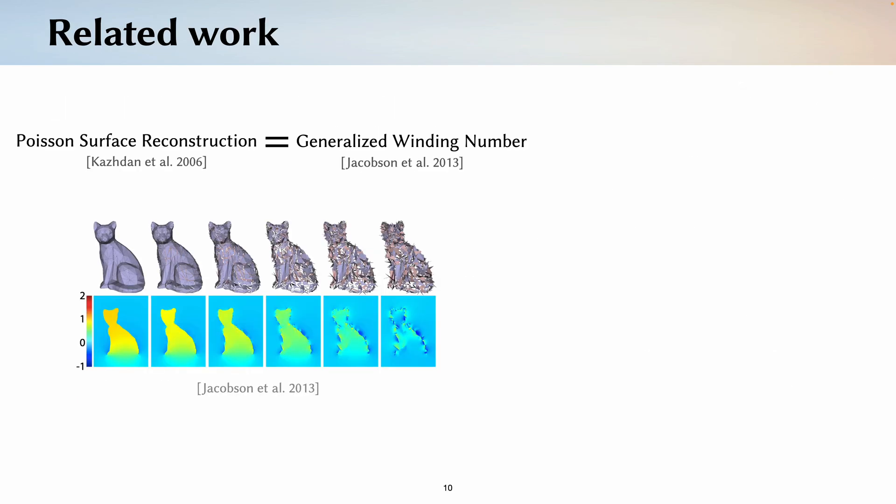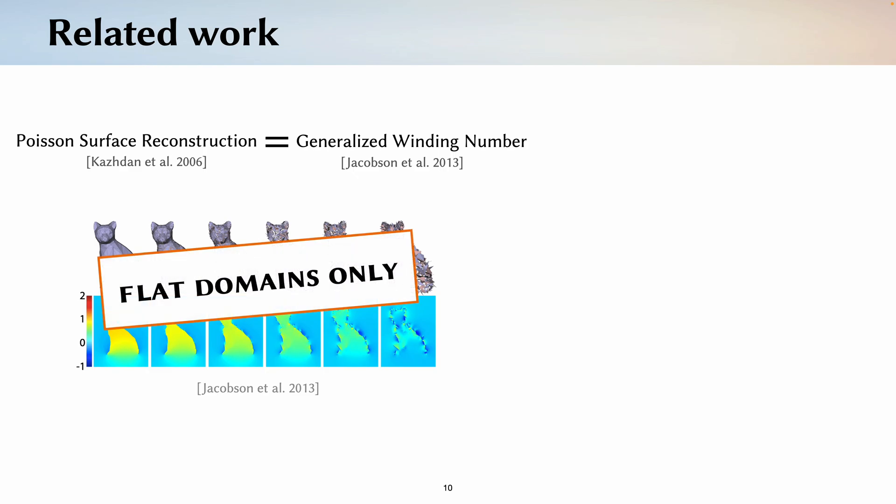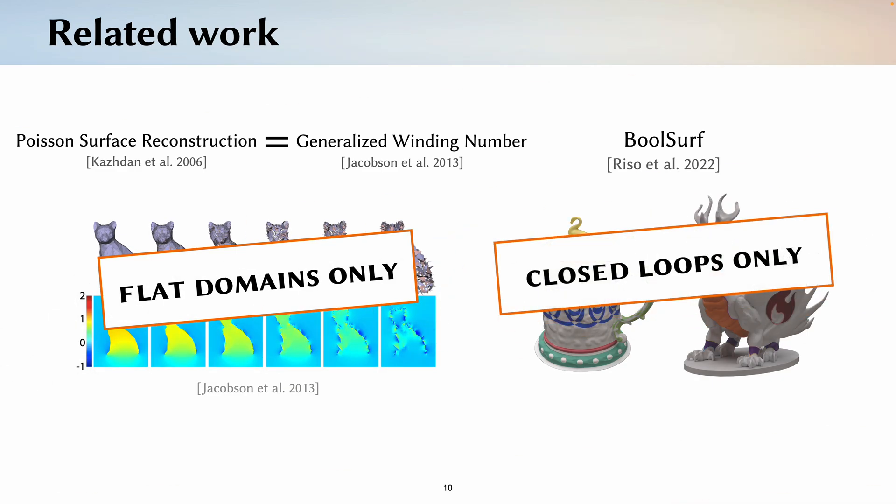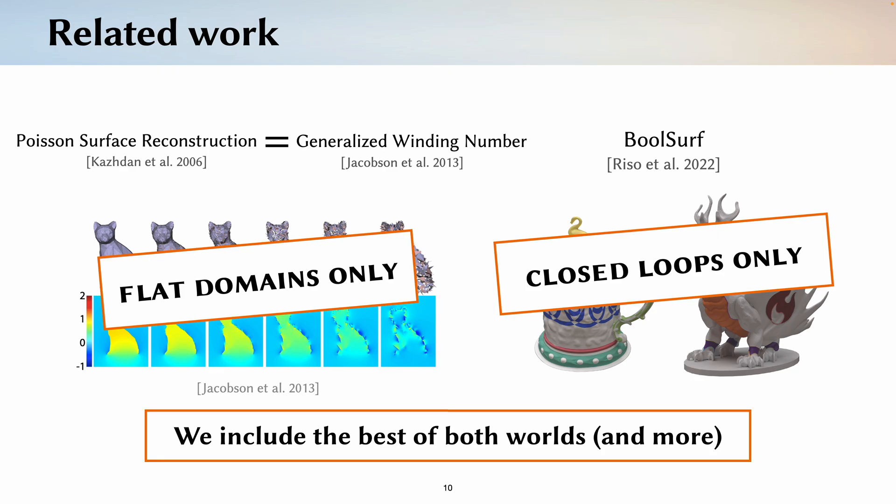Winding numbers for broken curves have found a lot of success through Poisson surface reconstruction and generalized winding number, but these methods only apply to flat domains. More recently, the BoolSurf algorithm addresses inside and outside on surface domains, but only for closed partition loops. Our method includes the best of both worlds, so we can now compute winding number for broken curves on surface domains.